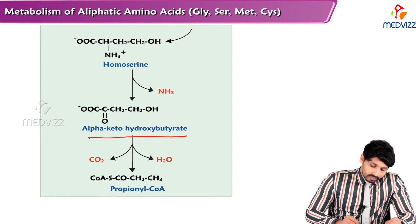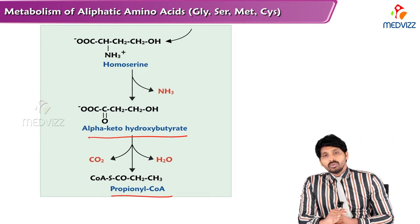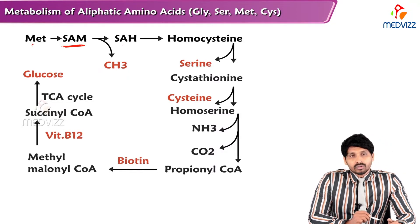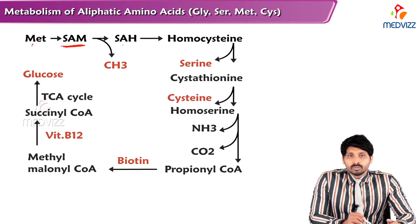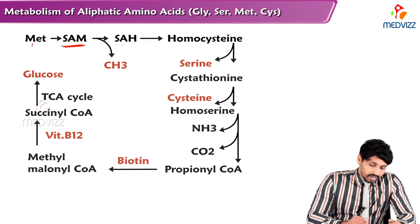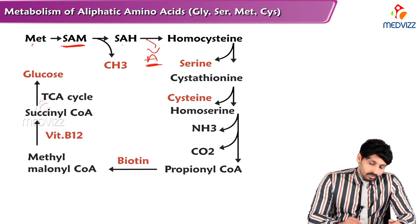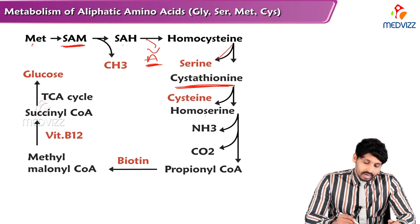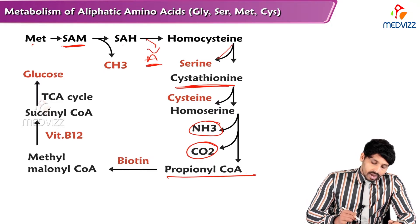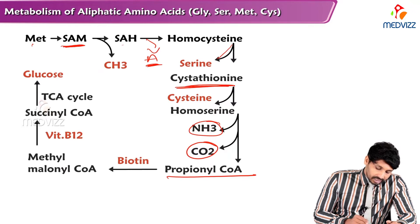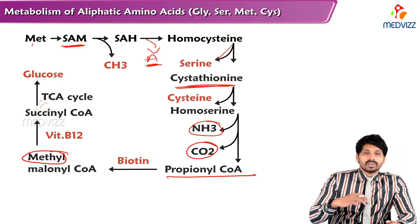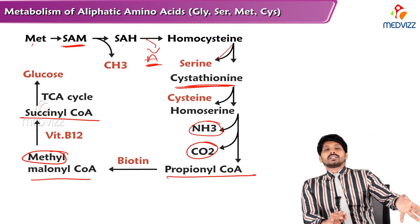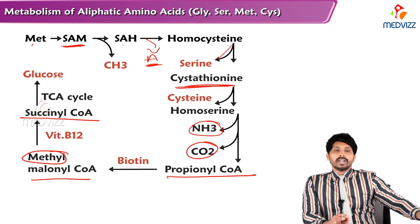Homocysteine is converted into alpha-ketobutyrate, then to propionyl-CoA, and through propionyl-CoA it enters succinyl-CoA and then the gluconeogenic pathway. To recap: Methionine is converted to SAM; SAM donates its methyl group to become S-Adenosyl Homocysteine (SAH); the adenosine group is removed leaving homocysteine; homocysteine reacts with serine to form Cystathionine; Cystathionine is split into Cysteine and homoserine. Homocysteine undergoes removal of the amino group and carbon dioxide to form propionyl-CoA, which by carboxylation becomes methylmalonyl-CoA; with the help of vitamin B12 (as methylcobalamin), methylmalonyl-CoA is converted to succinyl-CoA; succinyl-CoA enters the TCA cycle and progresses to malate and then oxaloacetate, which exits the mitochondria and participates in gluconeogenesis.